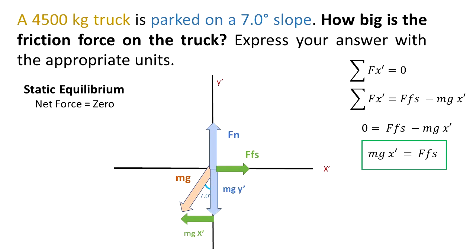We know from trig that Mg x' is the opposite, because you see that the angle is 7 degrees, so we have Mg sine of 7 is equal to the static friction force. We know that the mass is 4500 kg, the acceleration of gravity on Earth is 9.8 m per second squared, multiplied by the sine of 7.